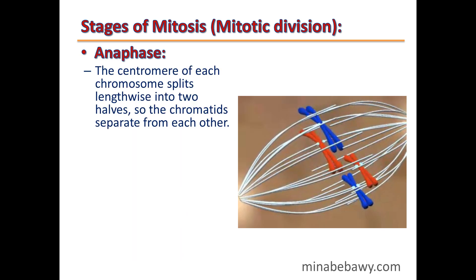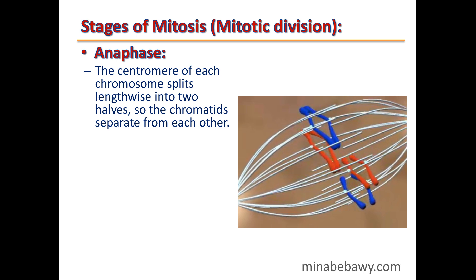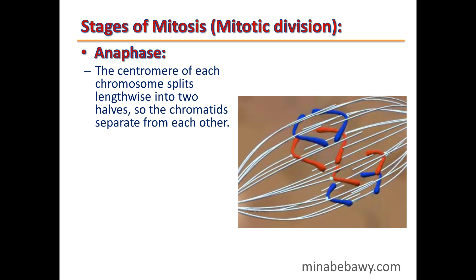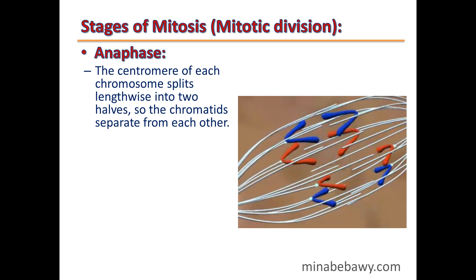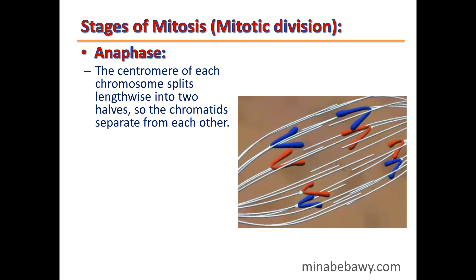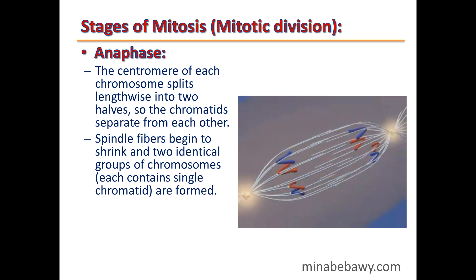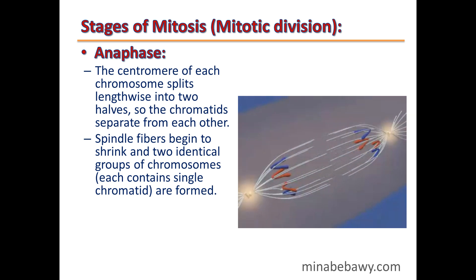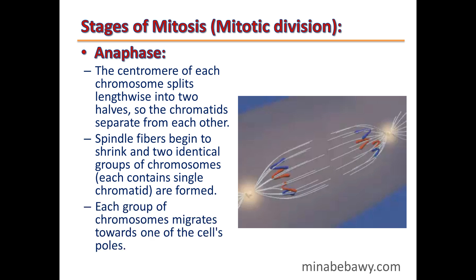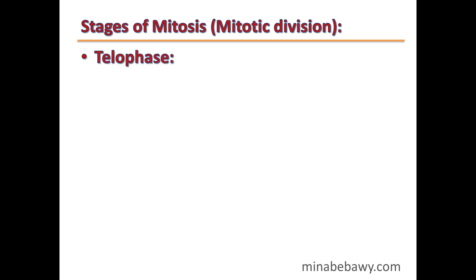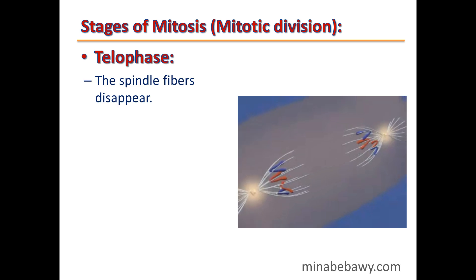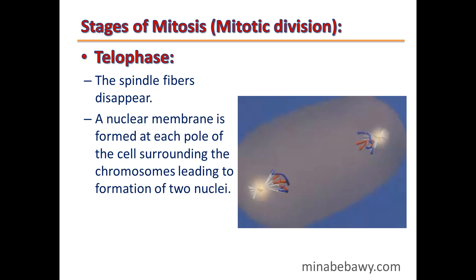The third phase is anaphase. As you can see from this video, the centromere of each chromosome splits lengthwise into two halves, so the chromatids separate from each other. Spindle fibers begin to shrink, and two identical groups of chromosomes — each containing single chromatids — are formed. Each group of chromosomes migrates toward one of the cell's poles.